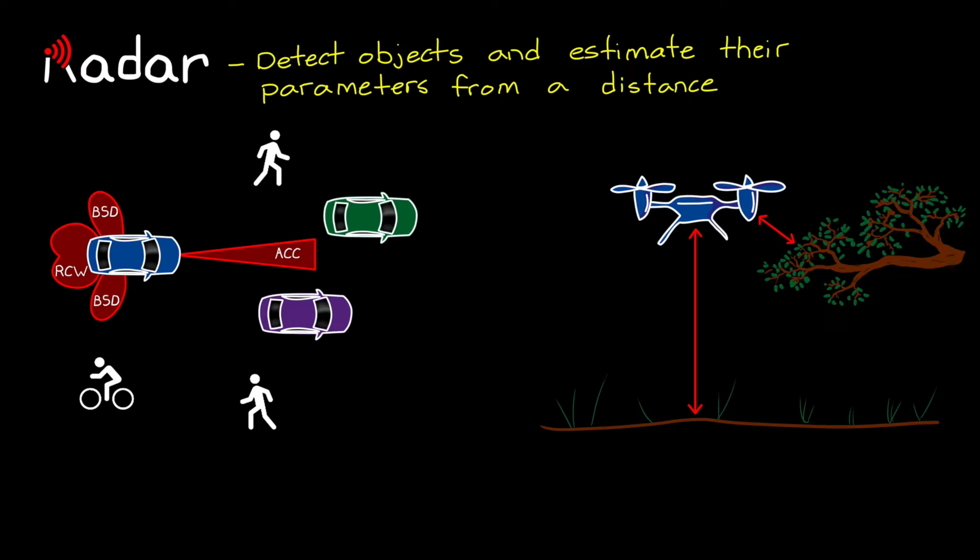But in order for radar to be a practical solution for these applications, it needs to be relatively low power, small form factor, and low cost. And part of how that is accomplished is with Frequency Modulated Continuous Wave Radar, or FMCW.